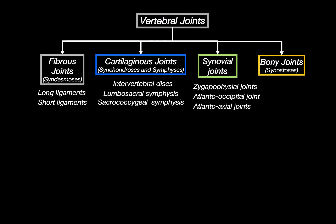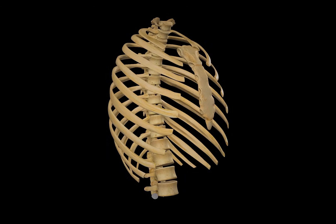We have now finished covering all the joints of the vertebral column: fibrous, cartilaginous, synovial, and bony joints. In the next video of the skeletal system series, I will cover the bones of the thorax, including the ribs and the sternum. Click the next video and I will see you there.